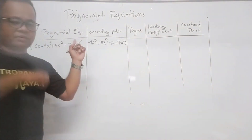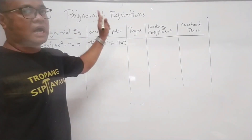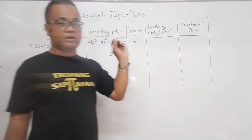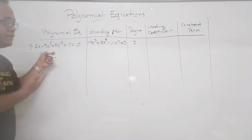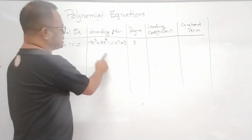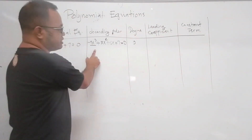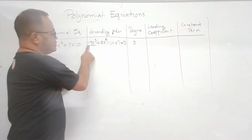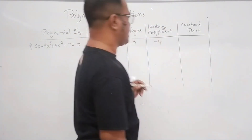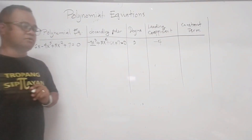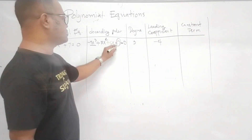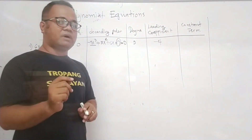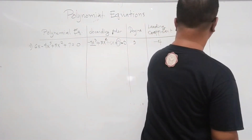The degree of the polynomial is the highest exponent, which is 3. So this is a 3rd degree polynomial. The leading coefficient is the coefficient of the leading term, which is negative 4. And the constant term is the term that does not contain a variable — meaning the exponent of the variable is 0 — so the constant is 7.